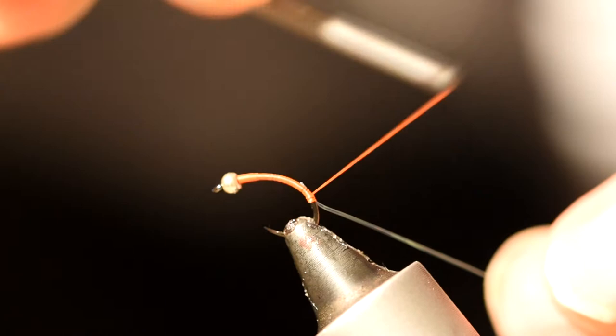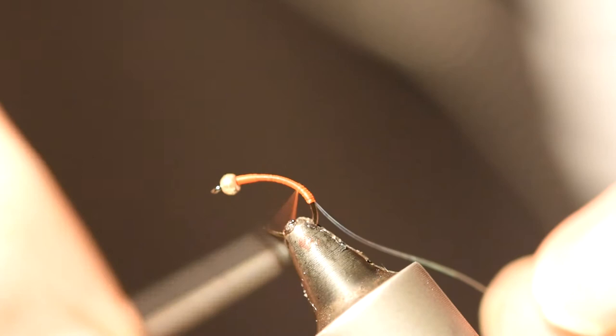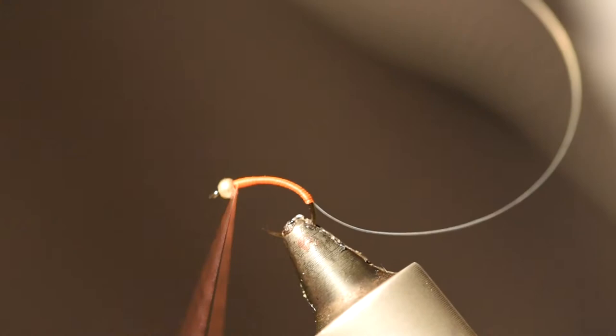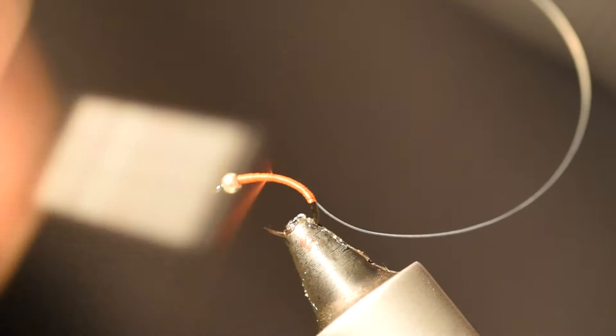When you're happy with that, bring your thread back up towards the bead. You're going to build up a nice carrot shape in your fly. Keep remembering to flatten your thread out.